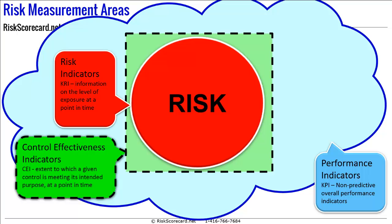For example, an increase in the number of complaints or an increase in the number of unreconciled transactions might be indicative of risk-specific activities going on. Once those risk-specific activities have been identified, they'll occur as a risk or risk element in your risk register.